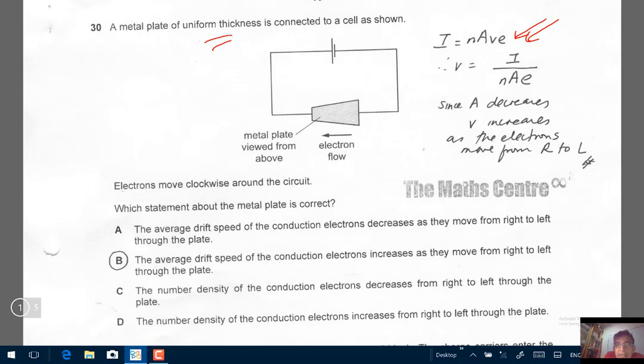So what is happening here is, as electrons flow from your right to left, you'll find that your area decreases. Area of the cross section.